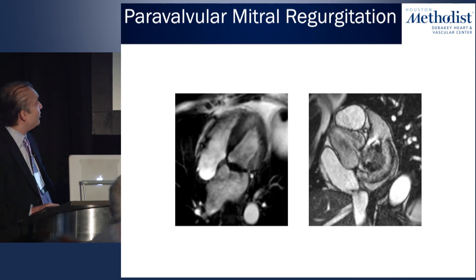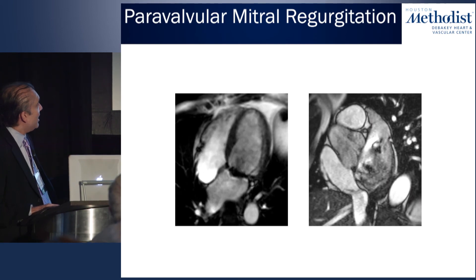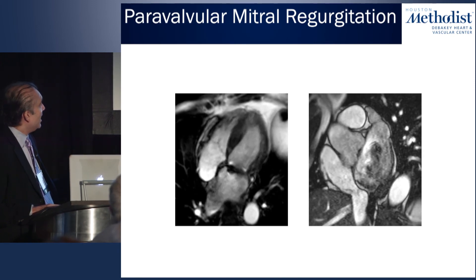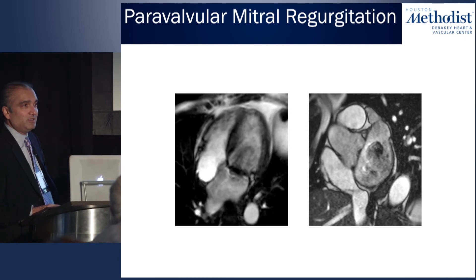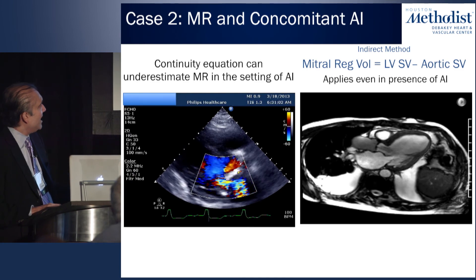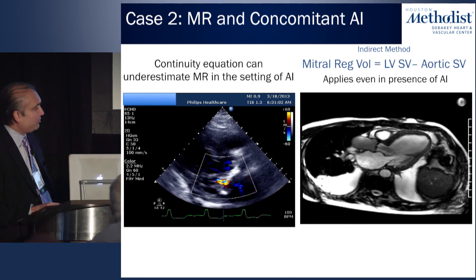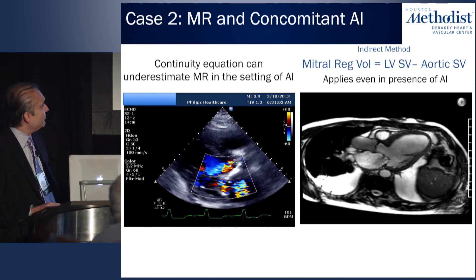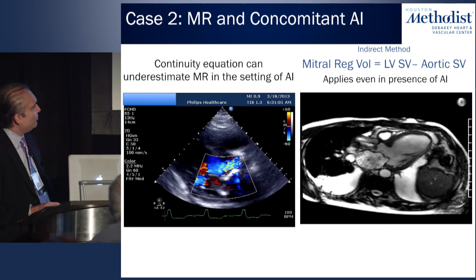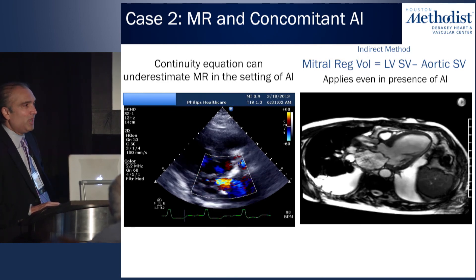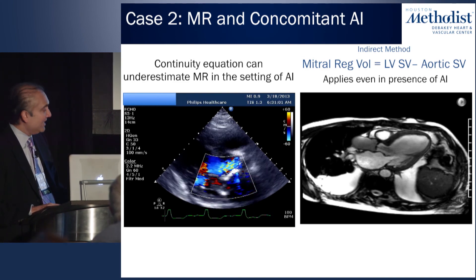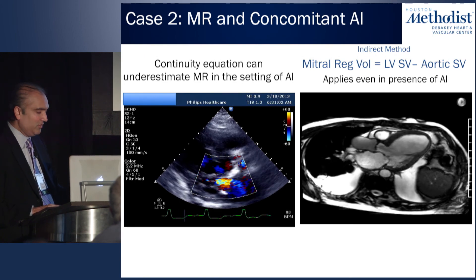Because the methodology is purely volumetric — comparing LV stroke volume to aortic outflow — it works equally well with prosthetic valves or a mitral clip, as these don't alter the quantification approach. This technique also handles coexisting aortic insufficiency: AI increases LV stroke volume but equally increases aortic forward flow, so the difference between the two — representing mitral regurgitant volume — remains unaffected. The two values cancel out, making this methodology valid in the setting of coexisting AI.